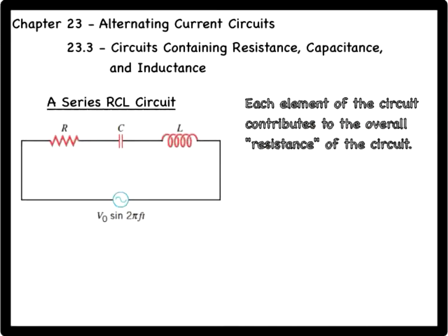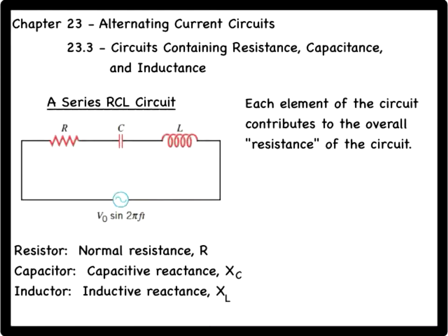Each element of the circuit—the resistor, capacitor, and inductor—contributes to the effective overall resistance. The resistor offers its normal resistance, and the capacitor and inductor contribute with the capacitive reactance and inductive reactance, respectively. This effective resistance is known as the impedance of the circuit.